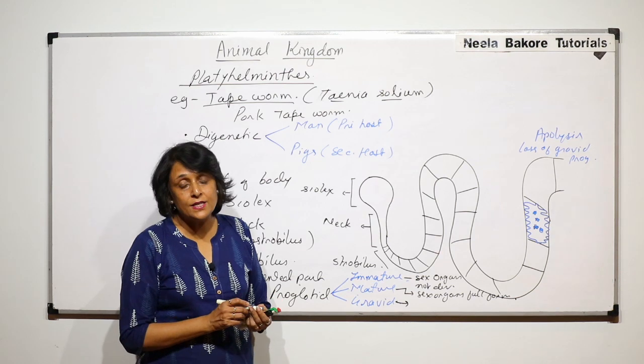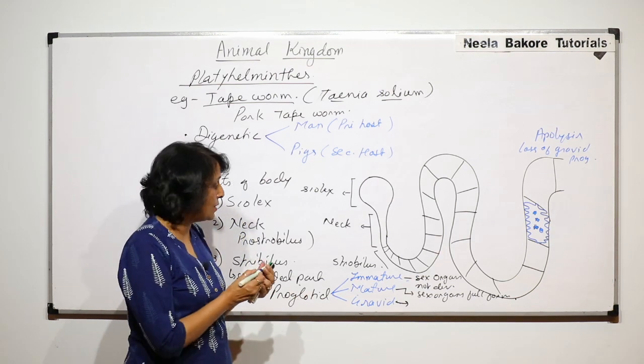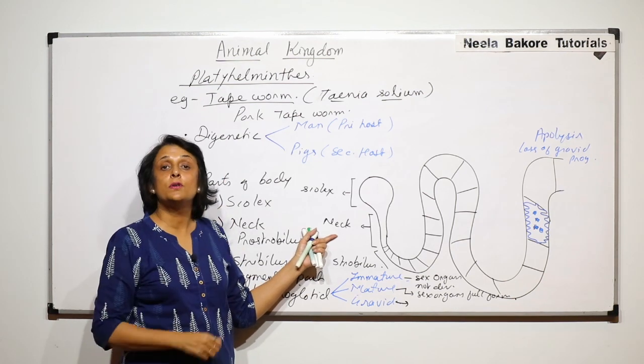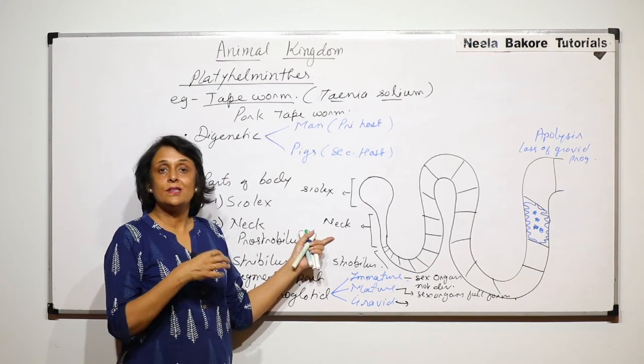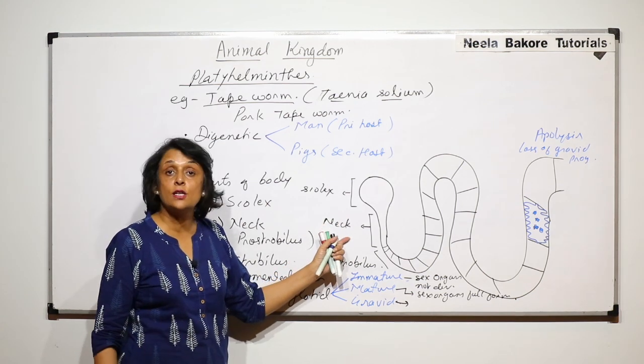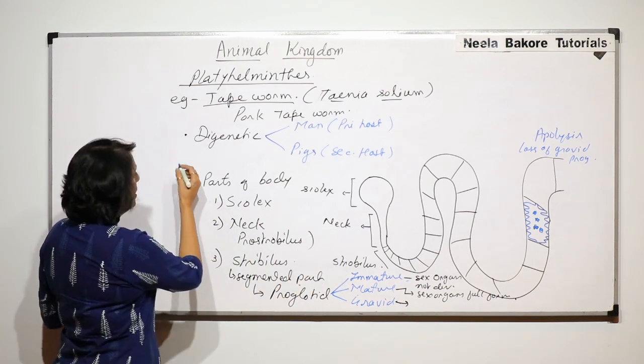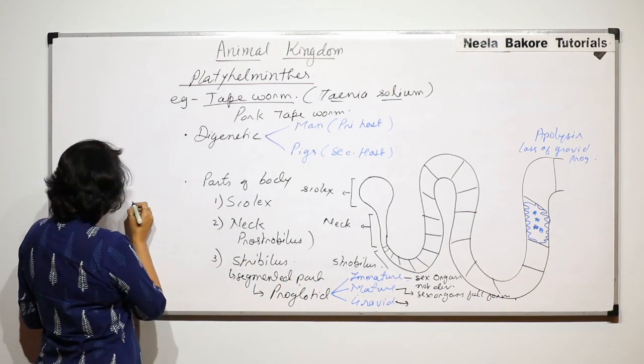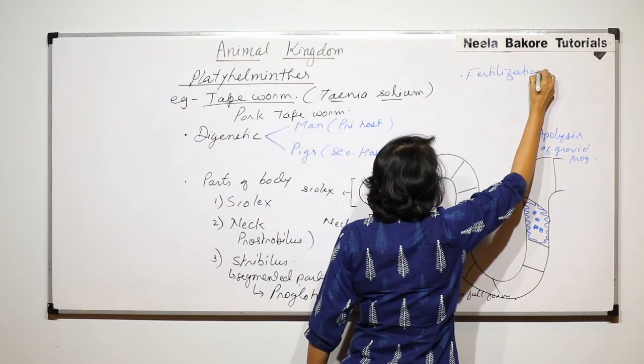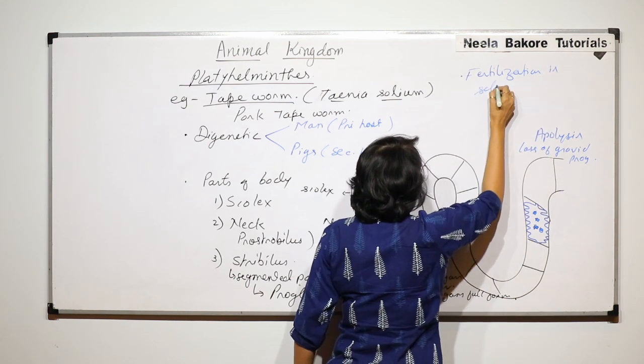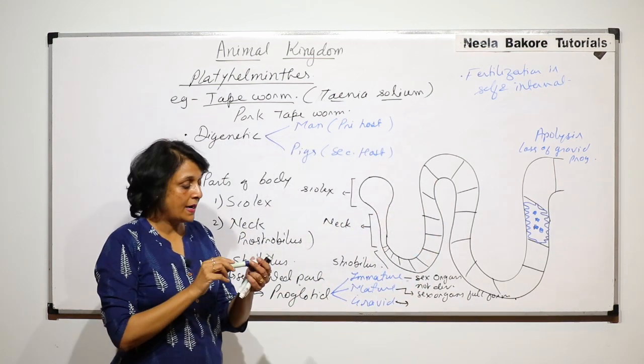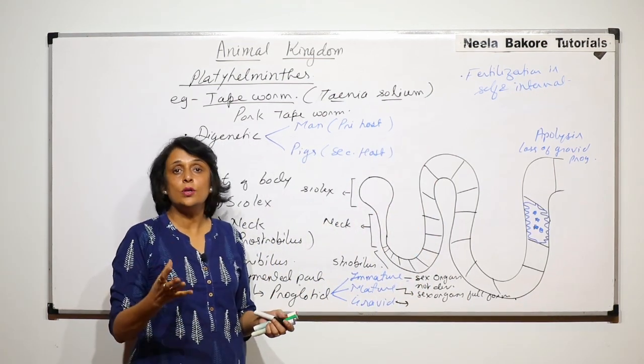Mature ones they are going to have testes and ovaries. Fertilization is going to take place, it is internal. As we already talked when we were talking about the general features, their body structure is such that it favors cross fertilization. But in case of tapeworm it is self fertilization. So fertilization is self and internal, it takes place inside the segment.